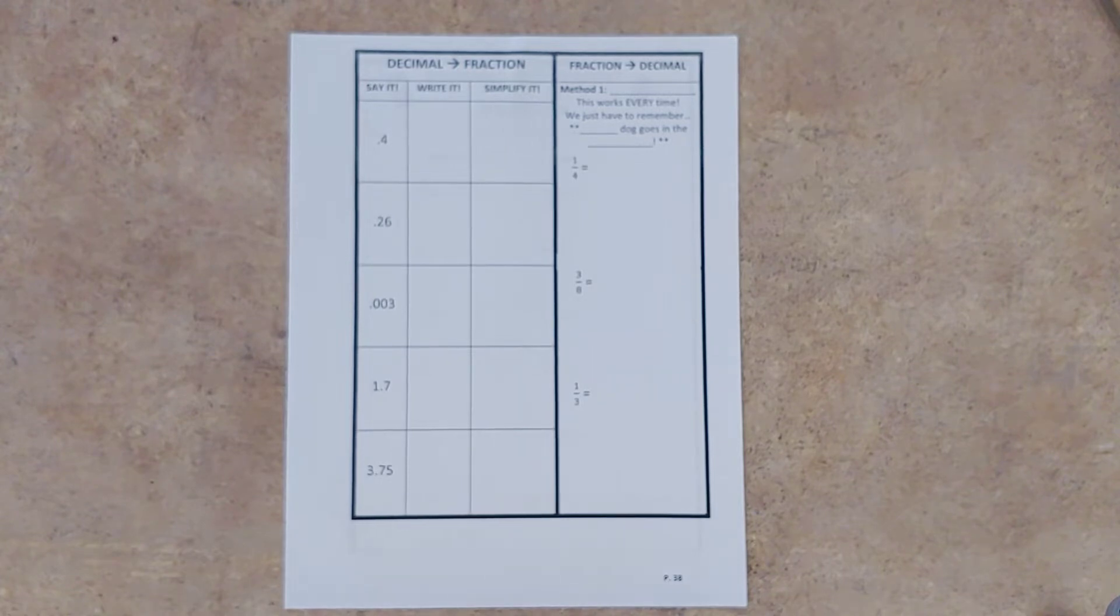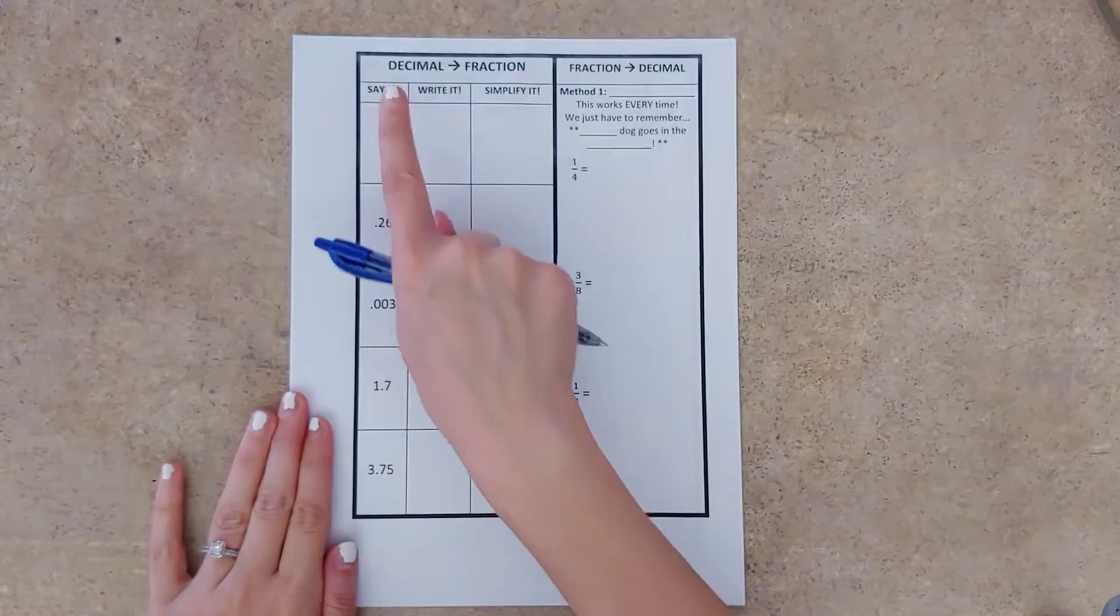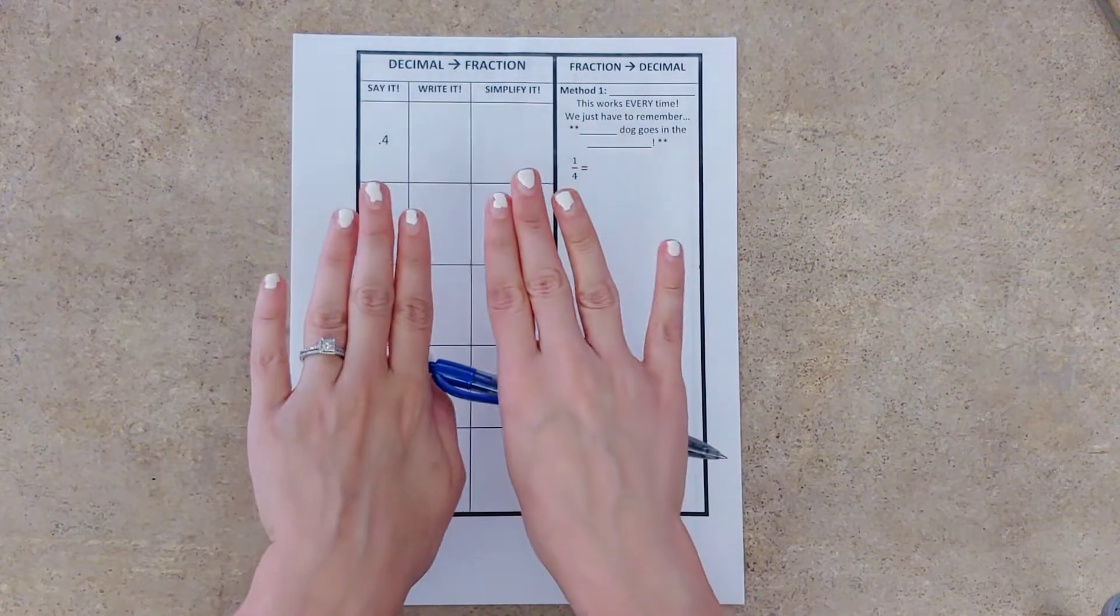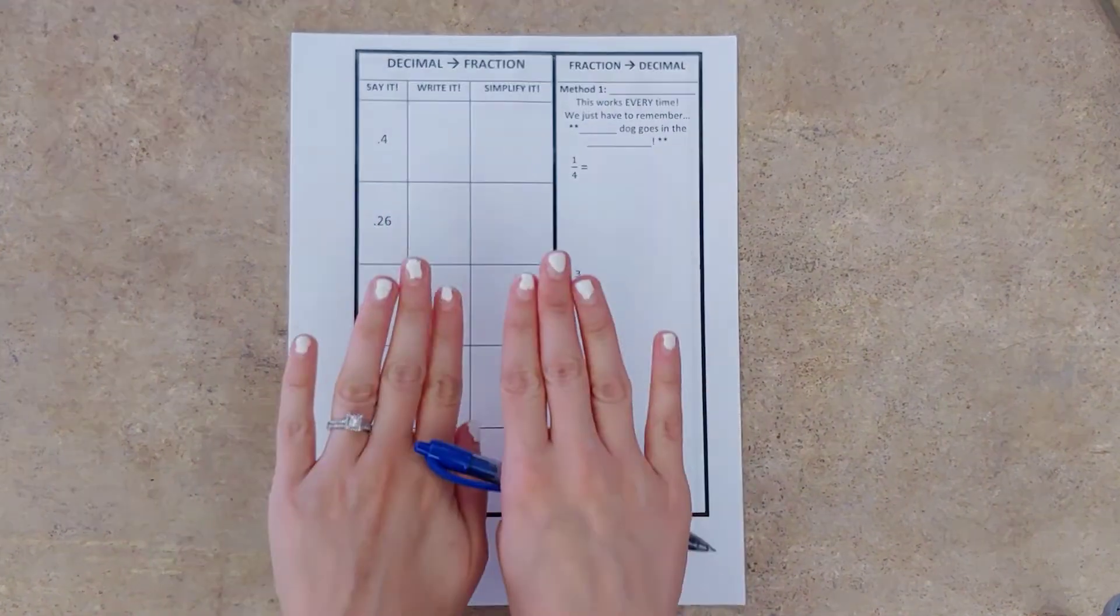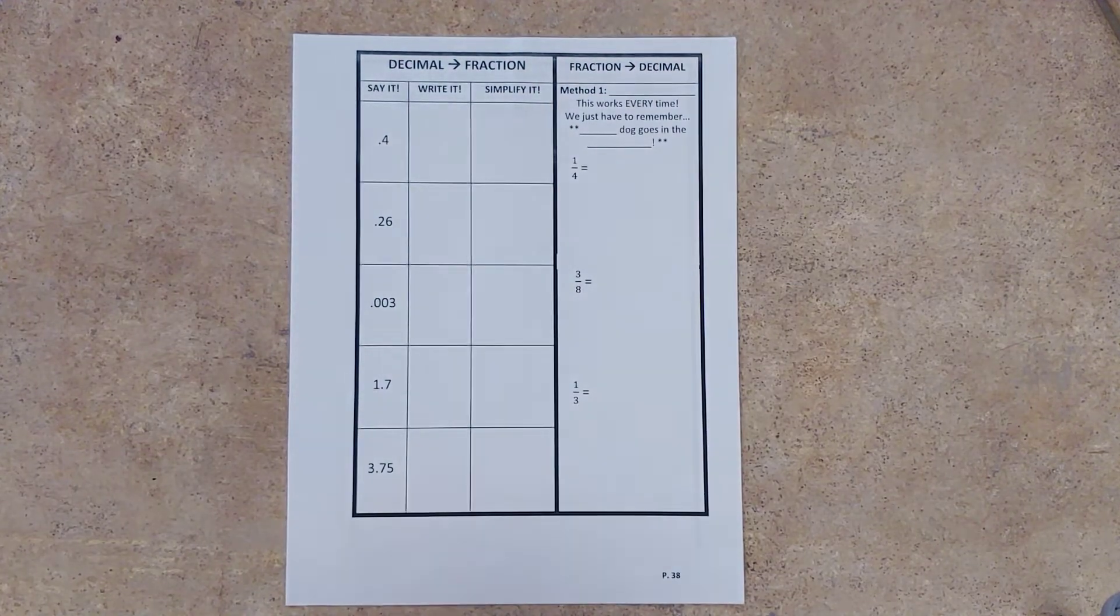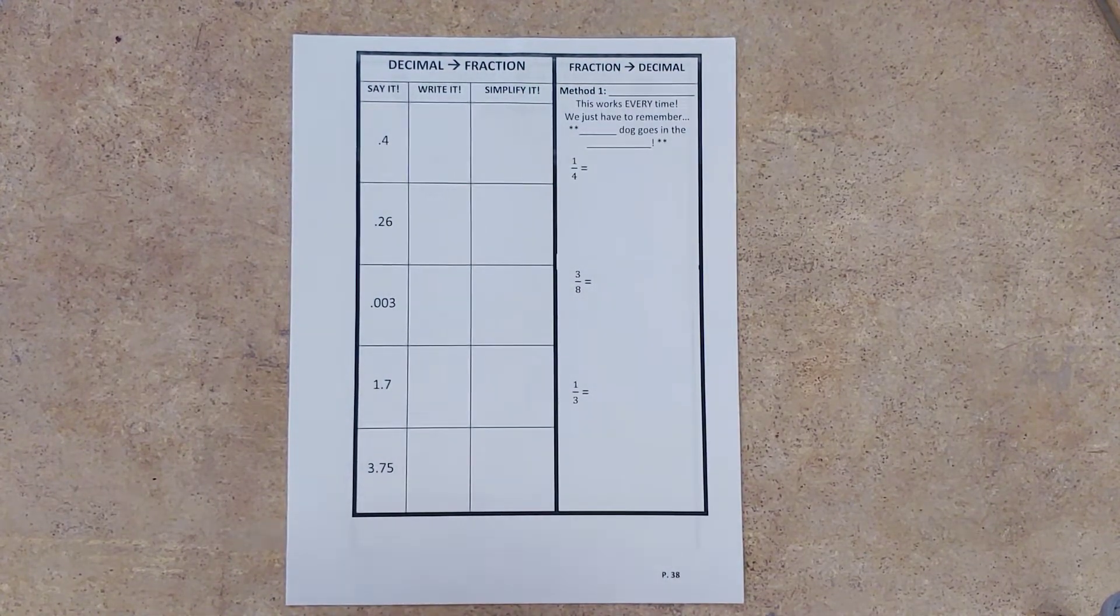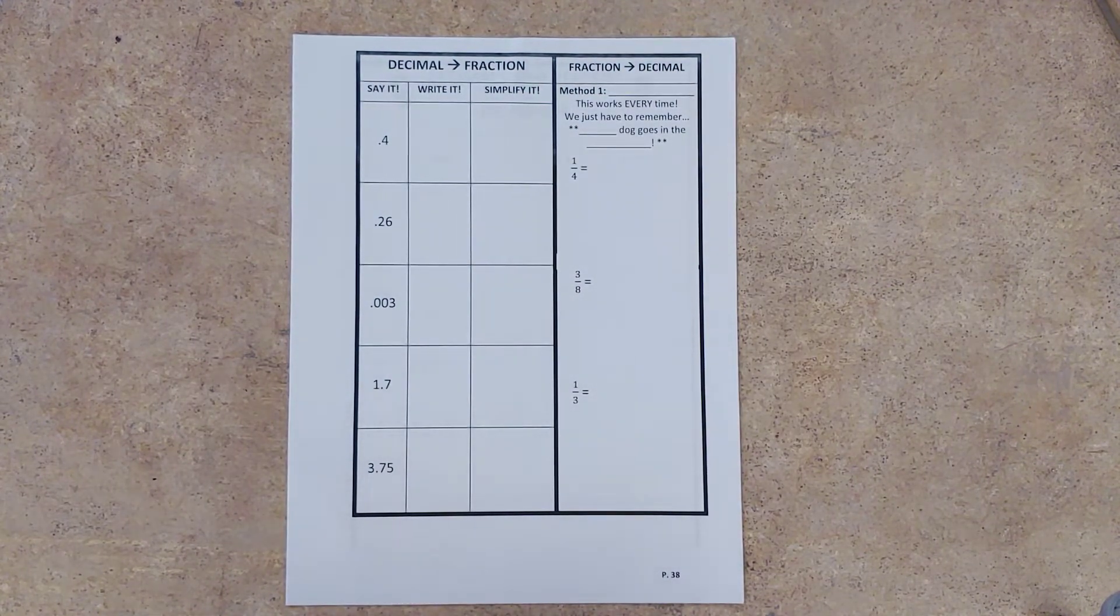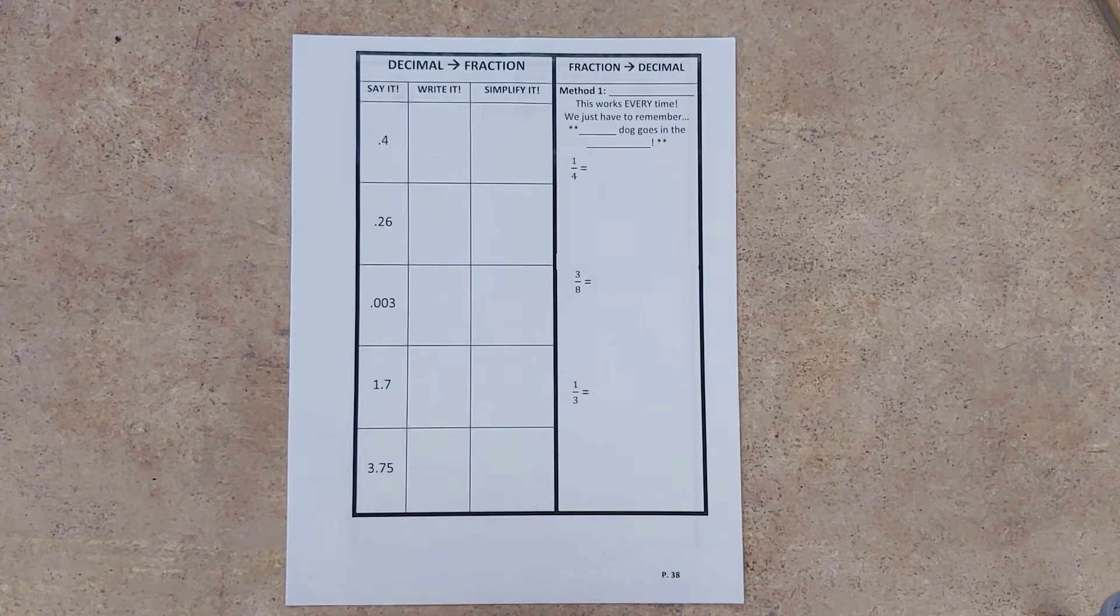The first thing we're going to work on is going from decimals to fractions. And to do that, we simply say it, write it, simplify it. And sorry, I do need a manicure. Please ignore my horrible nails. Say it, write it, simplify it. So for this, we need to make sure that we are saying our decimals correctly with their appropriate place values.